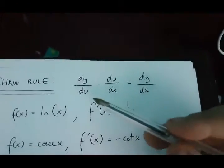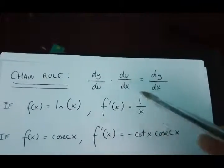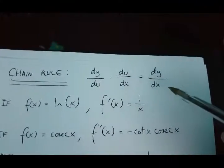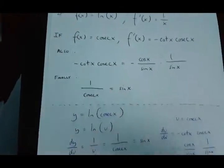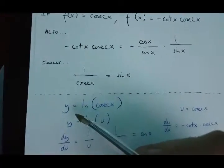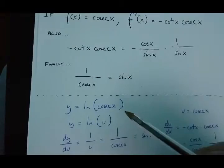Now that we've got dy/du and du/dx, we can use the chain rule to find dy/dx, which is the derivative of y equals ln cosec x.